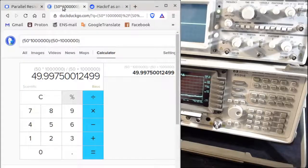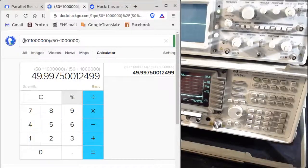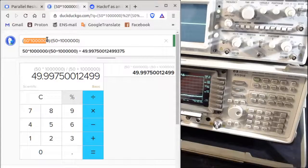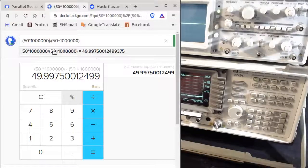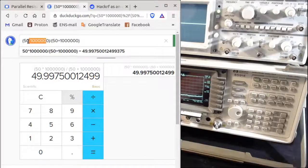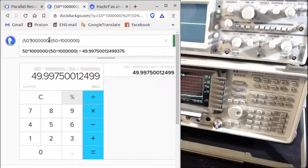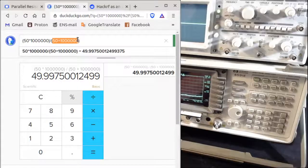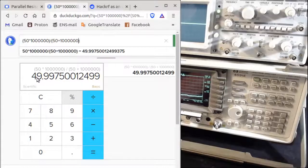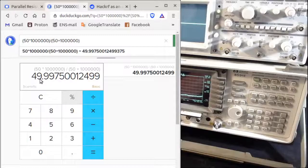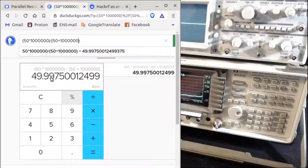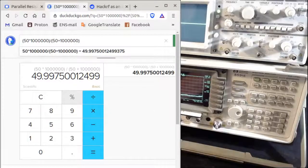It's just an approximation. The real calculation, if you check Wikipedia, you can find the formula for computing parallel resistance. The formula is 50 multiplied by 1 million, which is 50 million, divided by 50 plus 1 million, which is 1 million and 50. If you do the calculation, you get a result of 49.99 ohms, which is basically 50 ohms in practical terms.